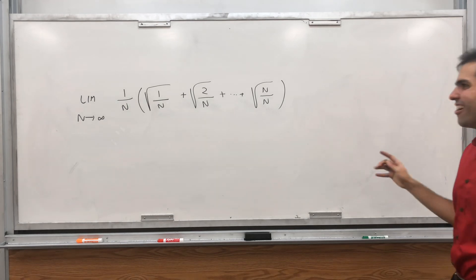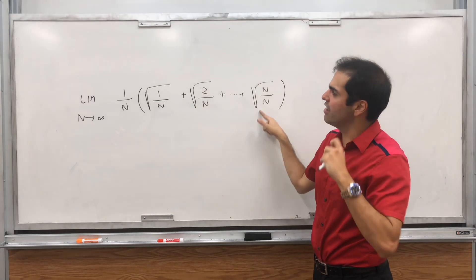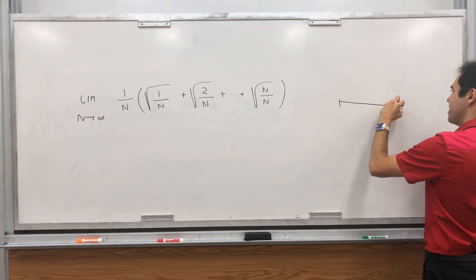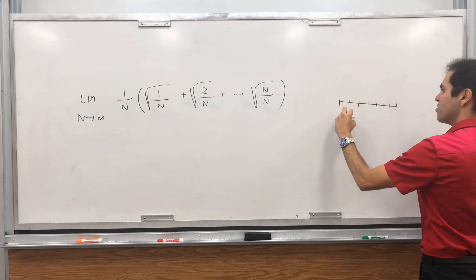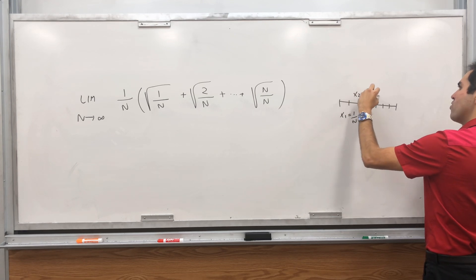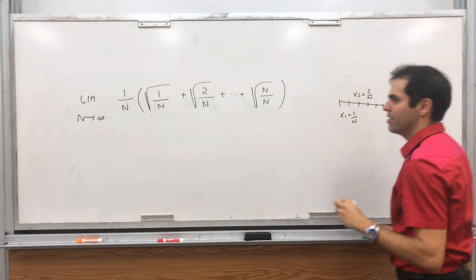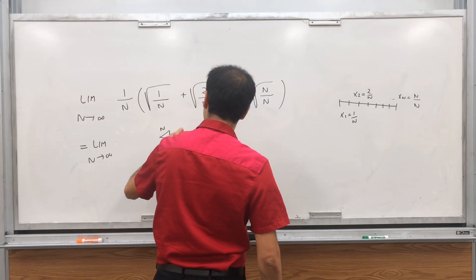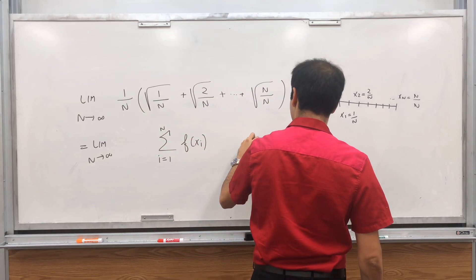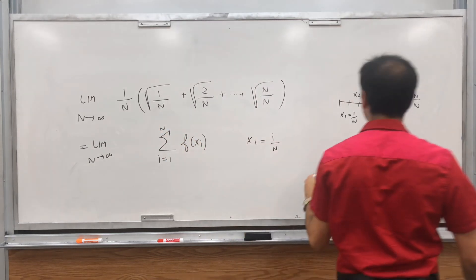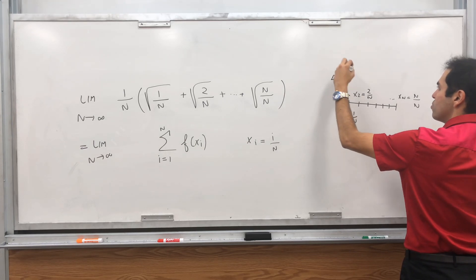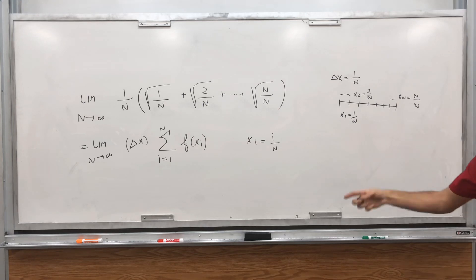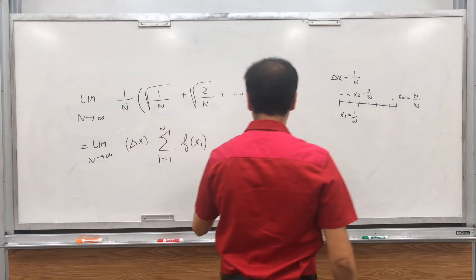Now you may or may not already know the answer. Look at what we're doing: we're summing up values of a function and scaling by 1/n — that's just an integral, literally the definition of the Riemann integral. We have x₁ = 1/n, x₂ = 2/n, ..., xₙ = n/n. So this is the limit as n goes to infinity of the sum from 1 to n of f(xᵢ) where xᵢ = i/n. The 1/n is just the width, delta x, times f(xᵢ) — precisely the definition of the Riemann integral of f(x) = √x.